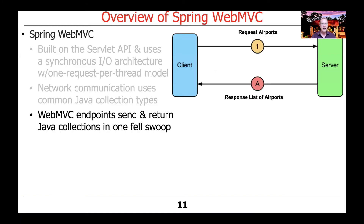What's interesting about this — and it will make more sense when we compare and contrast it with the alternative — is that these endpoints send and return Java collections in one fell swoop. Unless you go to a lot of extra effort to split things between requests and responses, which we won't do here because there are much better ways. You can see the client sends a request for the airports and gets back a list of airports in response, all in one fell swoop.